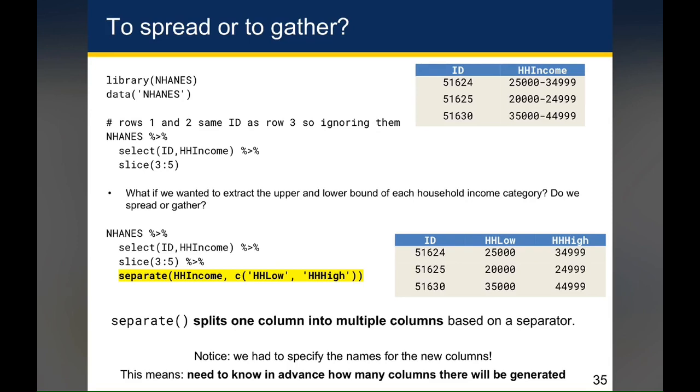And if you wanted to compute something like the average of those two, like the mean, for example, you'd have to first separate out those values into separate columns. And so the question I have for you is if you wanted to extract the upper and lower bound of each of those household income categories, maybe because you want to calculate the mean afterwards, how would we go about doing that? Would we be spreading or would we be gathering?